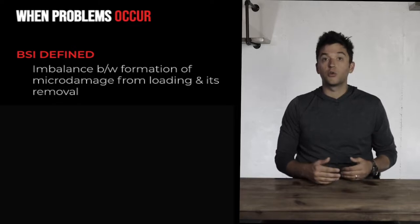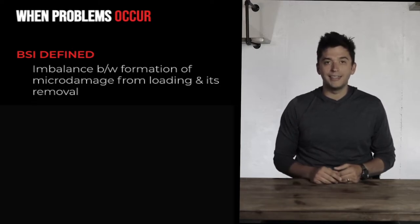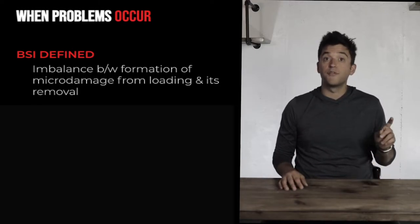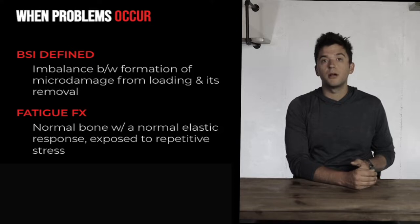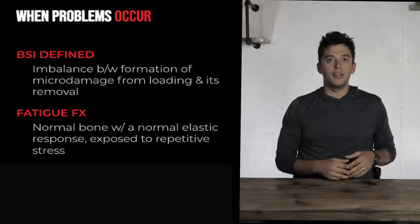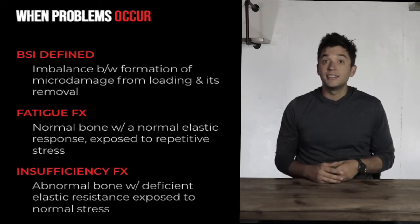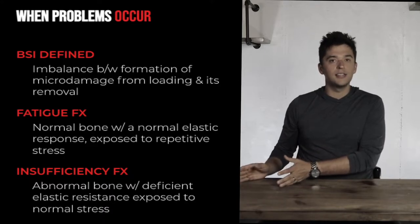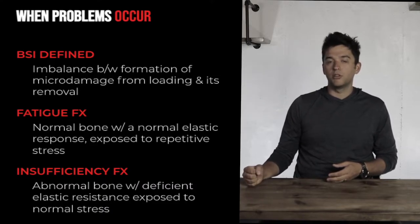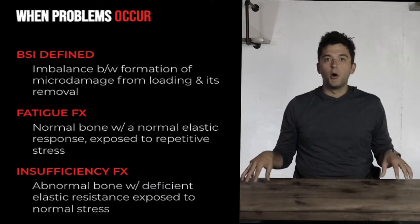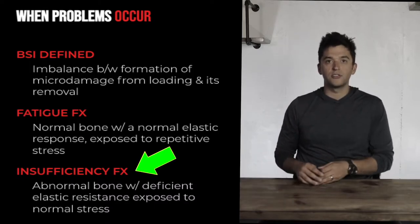Bone stress injury occurs when the accrual of micro-damage through loading cycles exceeds the body's ability to remove that damage. There are two types: a fatigue fracture, where a bone with a normal elastic response is simply overloaded — the healthy runner who just runs too much; and an insufficiency fracture, where training is more sensible but underlying reasons mean the bone can't handle that stress. Both happen in endurance sports, and insufficiency fractures are more commonly missed.